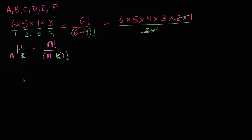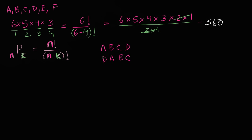Now all of that is review, but then we went into the world of combinations. In the permutations world, A, B, C, D and D, A, B, C would be two different permutations — both counted in whatever total we get, which is 30 times 12, equal to 360. So 360 permutations total, and each arrangement is a separate permutation.